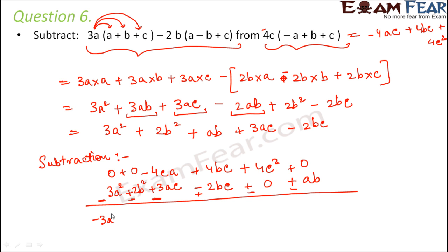So 0 - 3a² will be -3a². 0 - 2b² would be -2b². -4ac - 3ac would be -7ac. 4bc + 2bc would be +6bc. 4c² - 0 would be +4c². 0 - ab would be -ab. So this is the difference or the result of the subtraction.